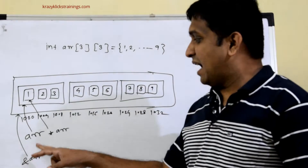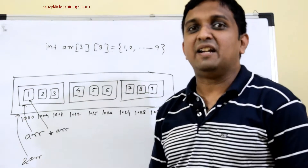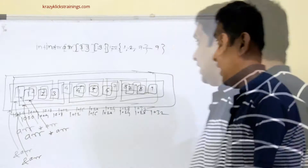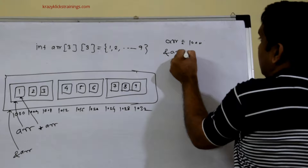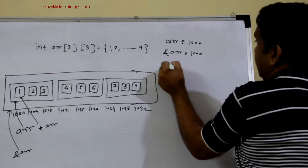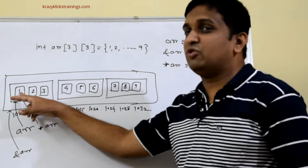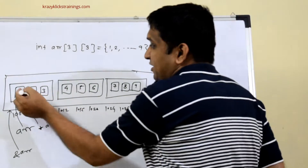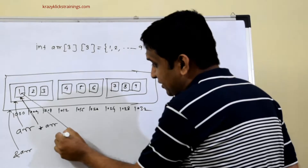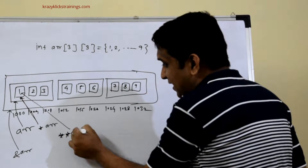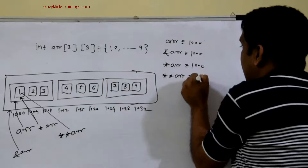ARR, &ARR, and *ARR all three values will give me the same output, which is the base address — in this case 1000. So ARR is 1000, &ARR is also 1000, and *ARR is also 1000. Now if I want to fetch the value 1 at that location, I need to apply one more asterisk. *ARR is pointing to the first integer, so to fetch the value I dereference one more time: **ARR will give 1.